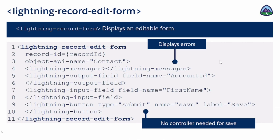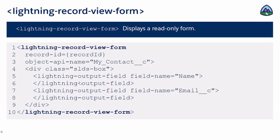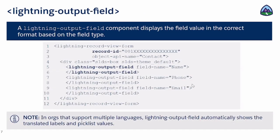Similarly, we have view form — which object you want to view, which record ID you want to view, and the values that you want to display. You can use output field for that. Output field is going to display the field value in the right format. Because you specified the field, it's going to look into the data type, the validation, and everything, and display the data back to you.